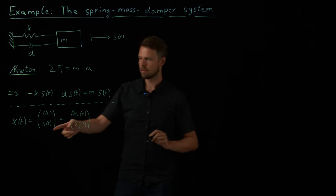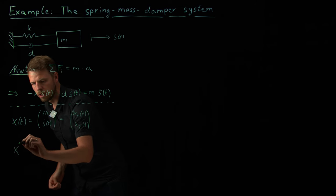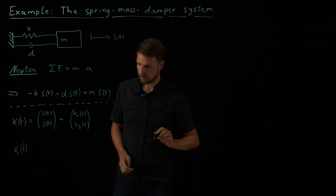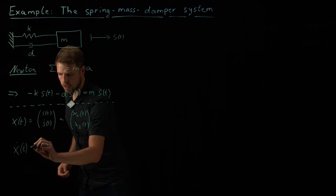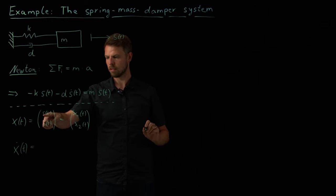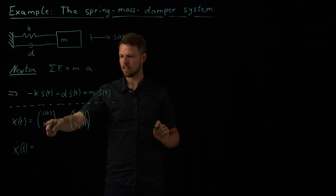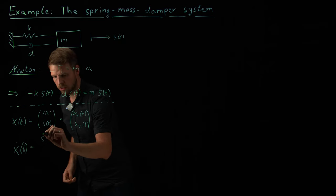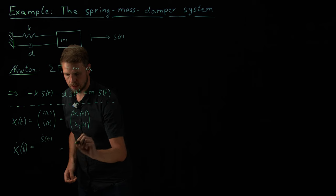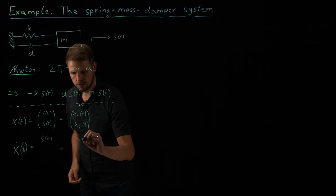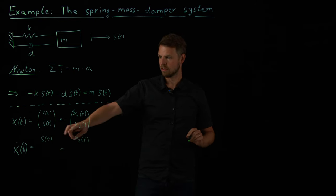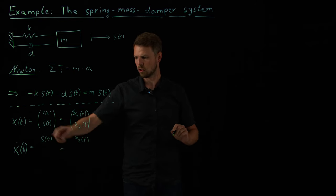And so now I can rather easily write down the equation I have for this one. x dot of t is in the first component, so the time derivative of s is s dot, which is x2, right? So this one is s dot of t, which will give me in the end x2 of t.